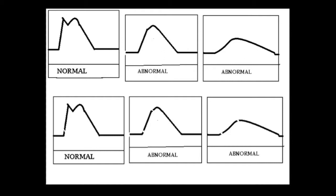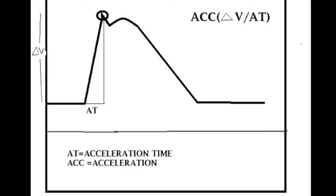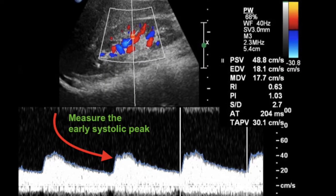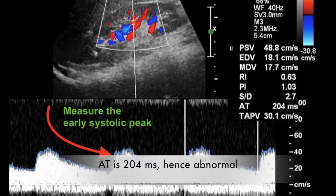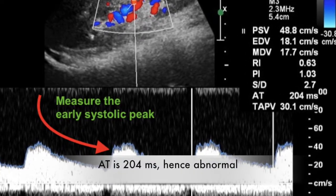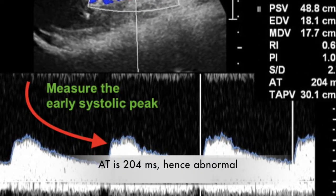The acceleration time is measured from the start of systole to the early systolic peak. This is the acceleration, which is actually a slope — a ratio. A normal first or early systolic peak is shown, followed by an abnormal one where the time taken for systole to reach its early systolic peak is prolonged.